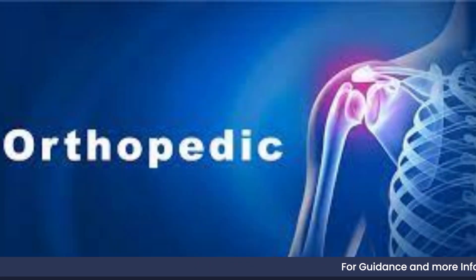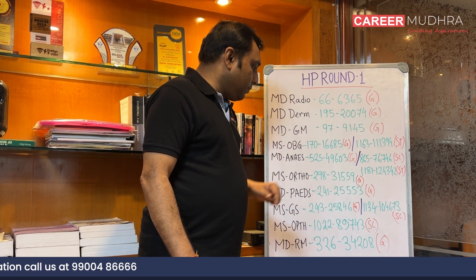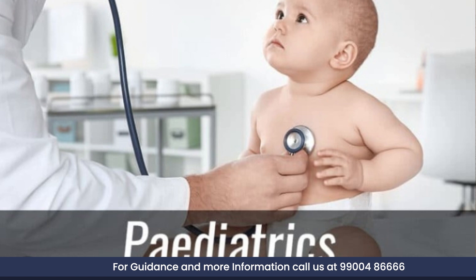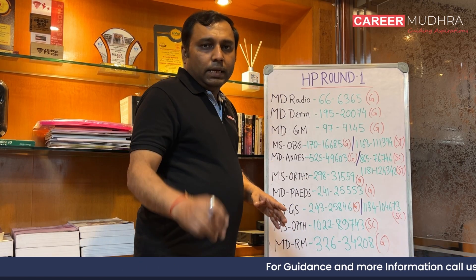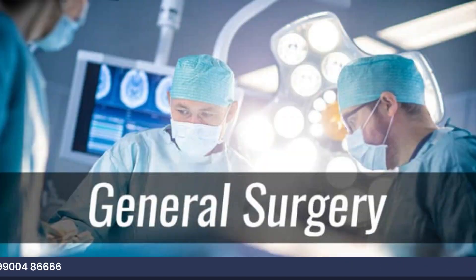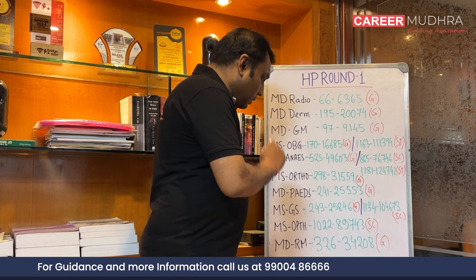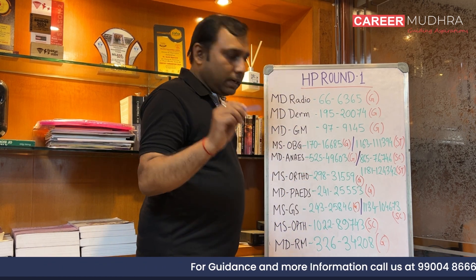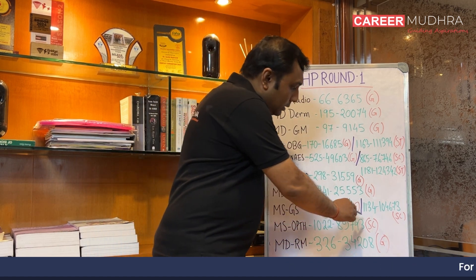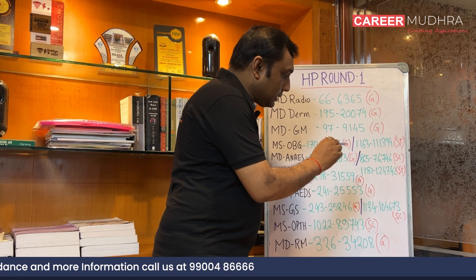For MS Ortho: state cutoff 298, all-India rank 31,559 — general category. MD Paediatrics: state cutoff 241, all-India rank 25,553 — general category. For MS General Surgery, they have both general quota and SC quota seats. In general quota, the state cutoff is 243 and all-India rank is 25,846. For SC category in MS General Surgery, the state rank is 1,134 and all-India rank is 14,673.